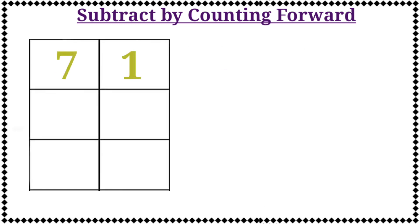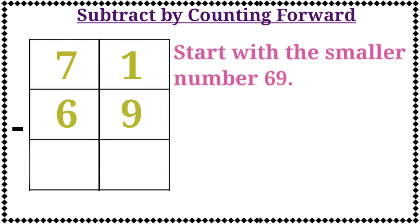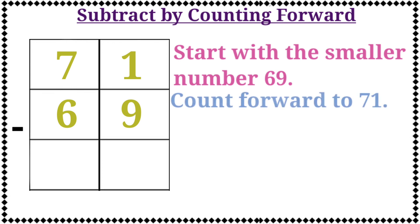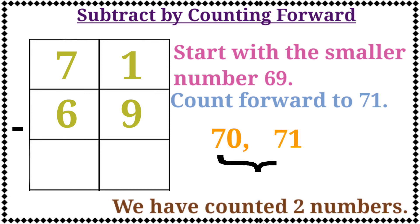The next example is 71 minus 69. Start with the smaller number 69, then count forward to 71. Let's count: 70, 71. Now we have counted 2 numbers. So, let's write the number 2 in the box. Okay kids, thank you.